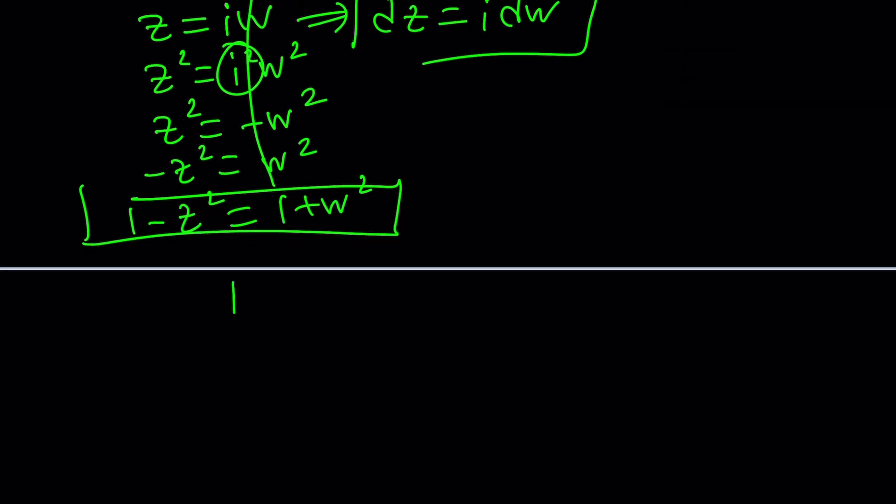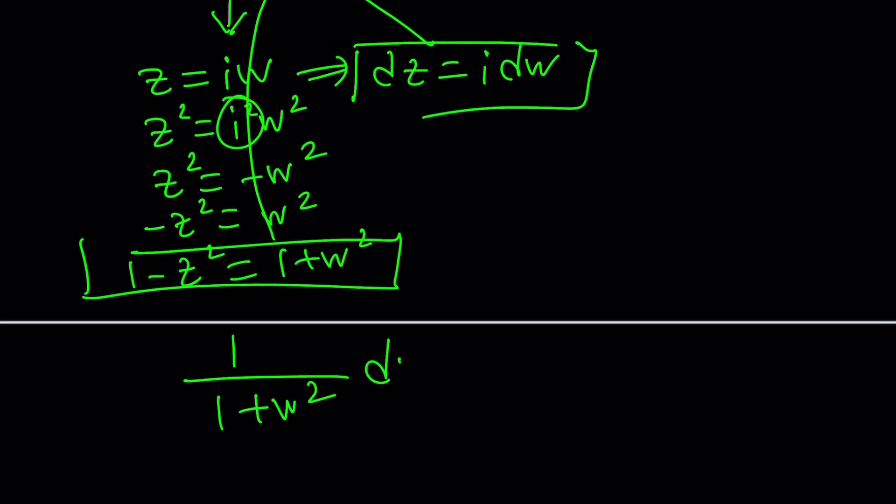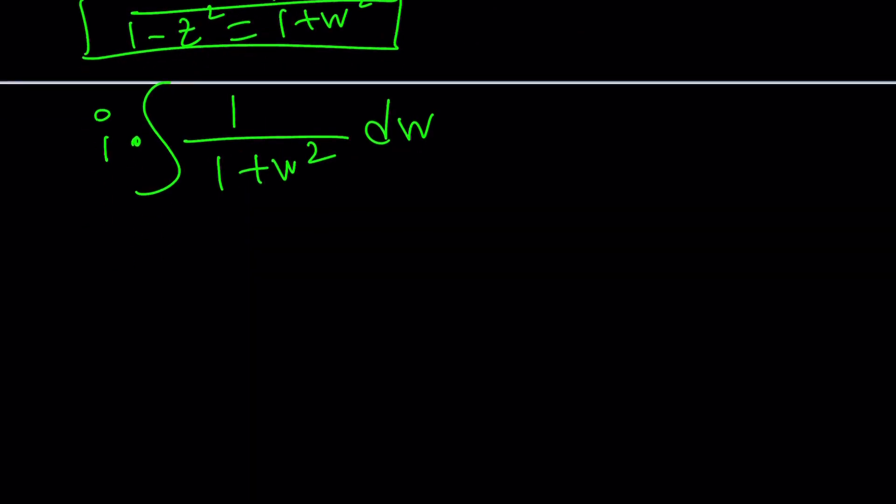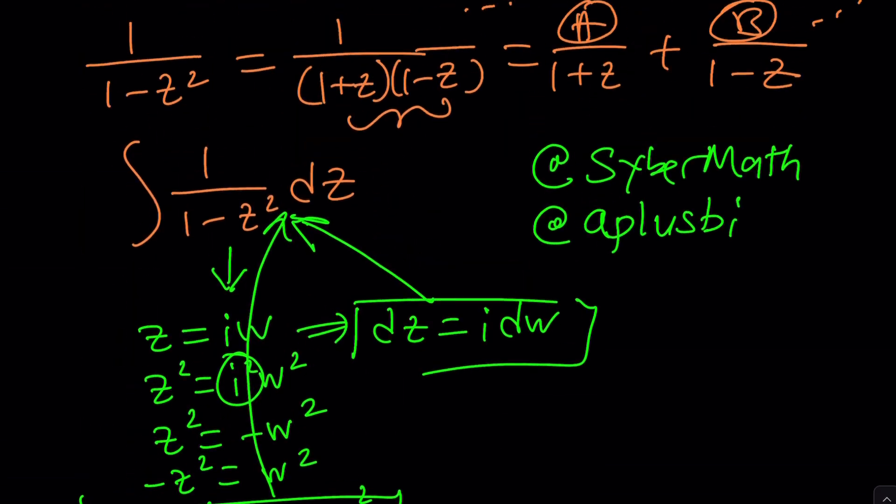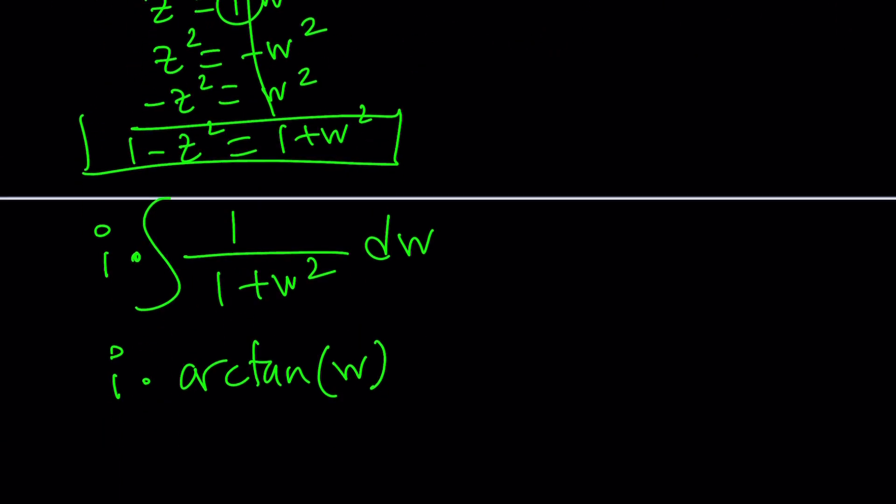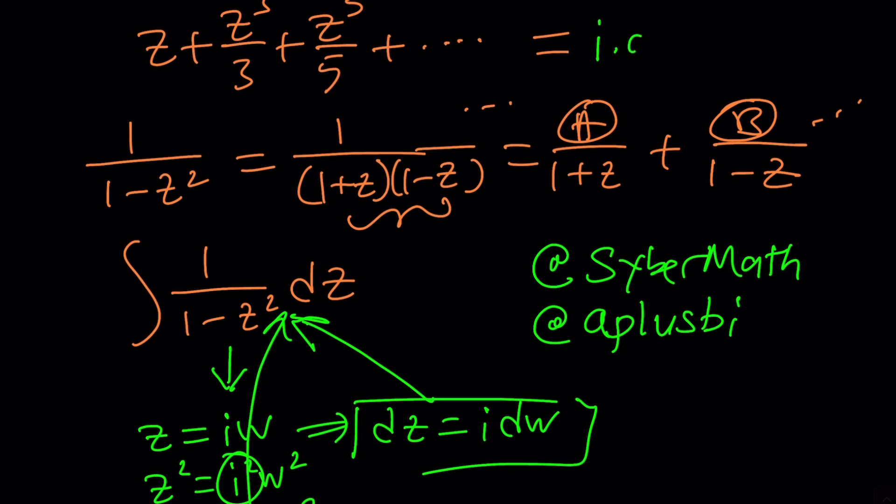Let's plug these into our integral. We're going to replace 1 minus z squared with 1 plus w squared and dz with i dw but I'm going to pull the i out. It's a constant so we can pull it out. This is a super easy integral, it is just arctangent. Now that integral appears on the right hand side so we add the constant: i times arctangent w plus c.